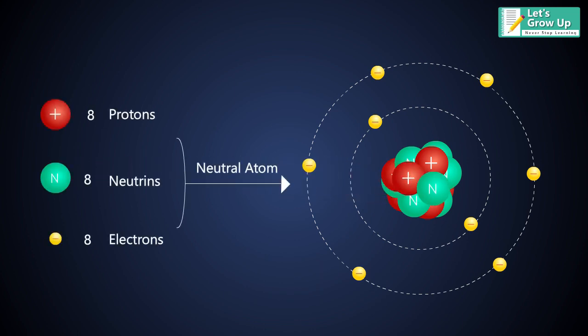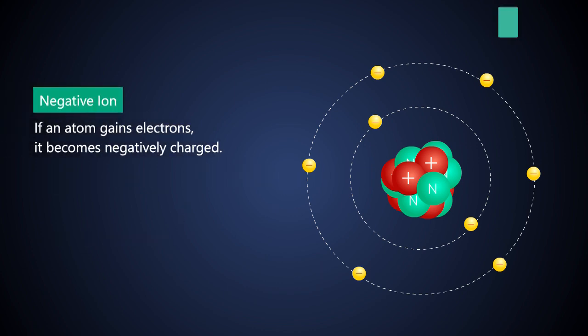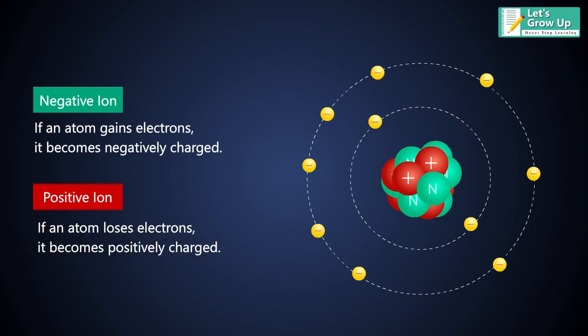Atoms may be neutral or electrically charged. An atom that carries a positive or negative charge is called an ion. If an atom gains electrons, it becomes negatively charged. If an atom loses electrons, it becomes positively charged.